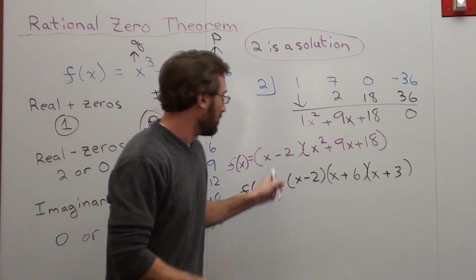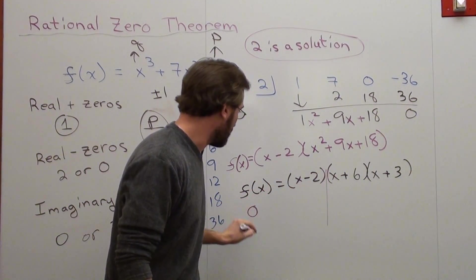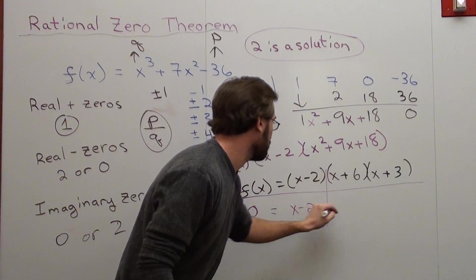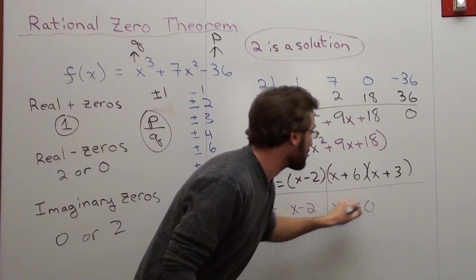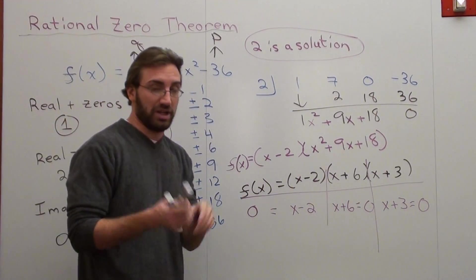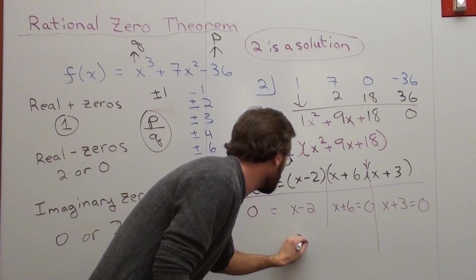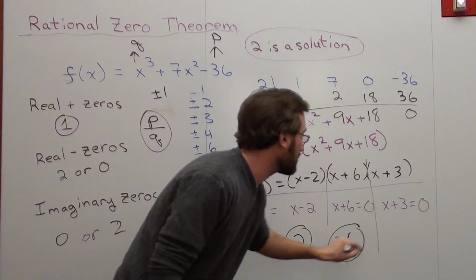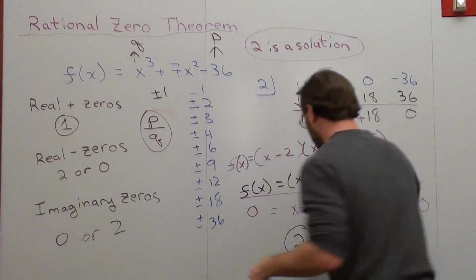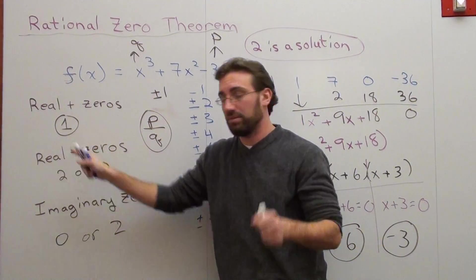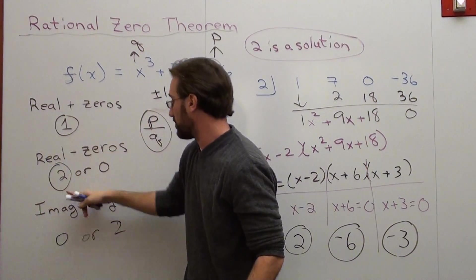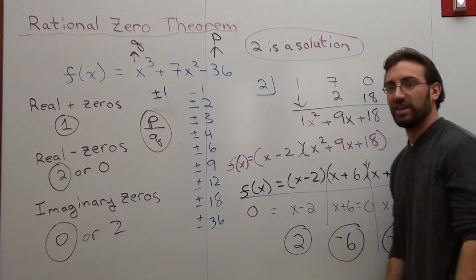Set this equal to zero. x minus 2 is equal to zero. x plus 6 is equal to zero. x plus 3 is equal to zero. My answers, my zeros for this graph, are 2, negative 6, and negative 3. I have one real positive zero. Bam! I have two real negative zeros. So it's this one. And it has to add up to 3 because that's the highest degree. So 1 plus 3, so it's got to be zero imaginary zeros. That's really all there is to it.